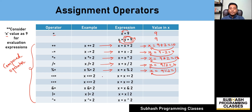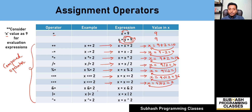When I say x left shift equal-to 2, this is x is equal to x left shift of 2, which results in x is equal to 9 left shift of 2, giving a value of 36, and 36 gets stored into x. Similarly, x right shift equal-to 2 is considered as x is equal to x right shift of 2, which is 9 right shift of 2. When I say x AND equal-to 2, this is x is equal to x bitwise AND 2, giving 9 bitwise AND 2, which results in 0. When I say x bitwise OR equal-to 2, this is x is equal to x OR 2, giving 9 bitwise OR 2, which results in 11. And x XOR equal-to 2 is x is equal to x XOR 2, giving 9 XOR 2, which results in 11.